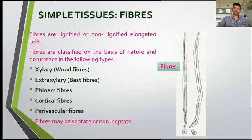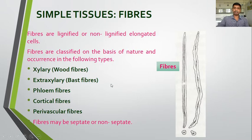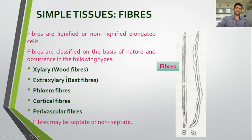Fibers are very long, narrow, thread-like structures — lignified or non-lignified elongated cells. Fibers are classified on the basis of nature and occurrence into the following types: xylary fibers — those occurring in the wood region, also called wood fibers; extra-xylary — outside of the xylem, these are bast fibers; phloem fibers; cortical fibers; and perivascular fibers between the vascular bundle. Fibers may be septate or non-septate — partitions may or may not be seen.